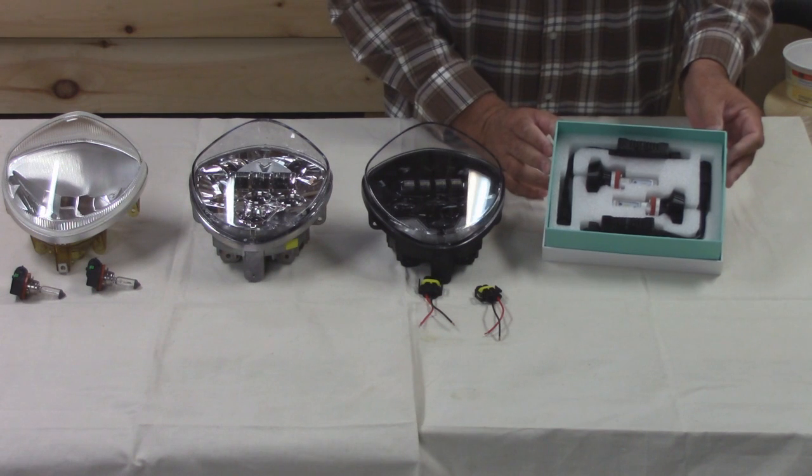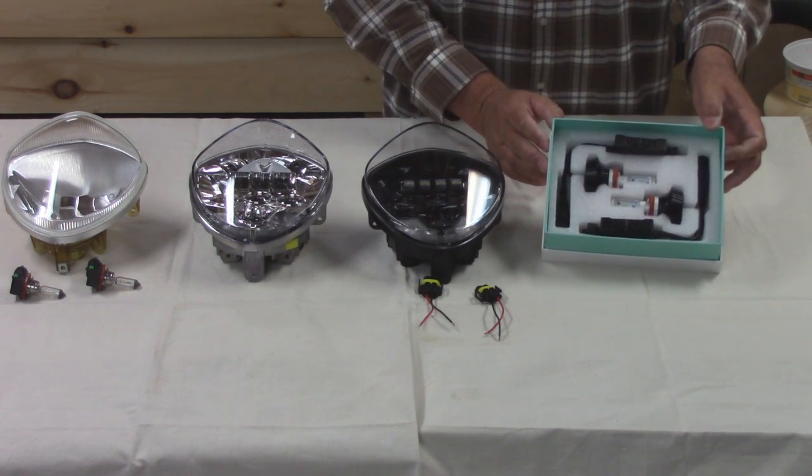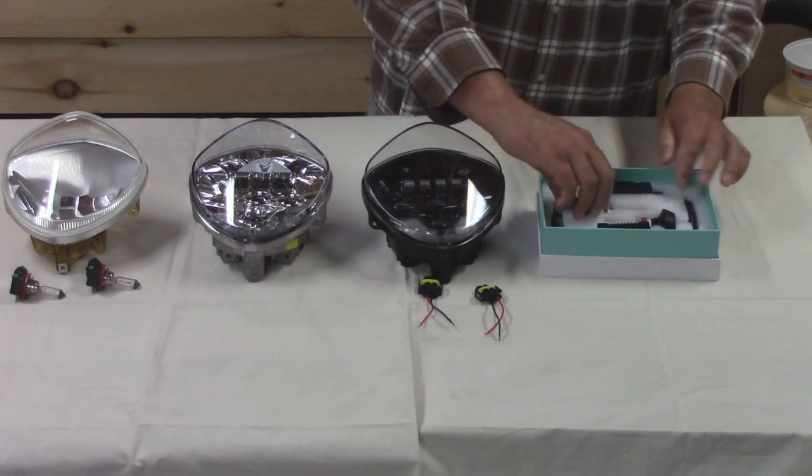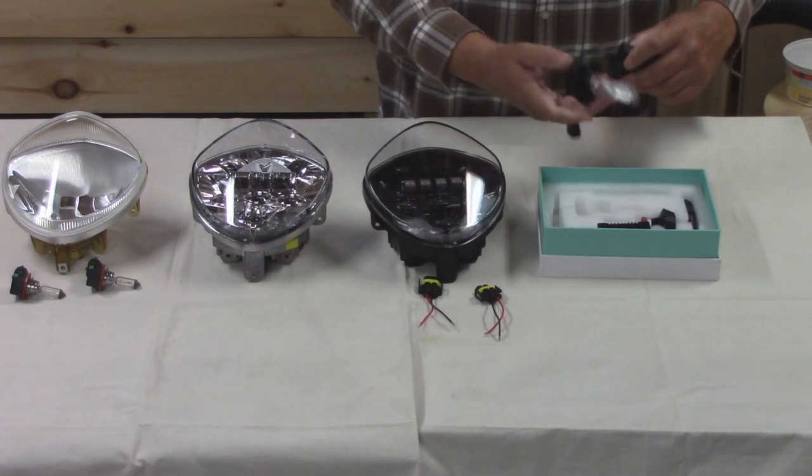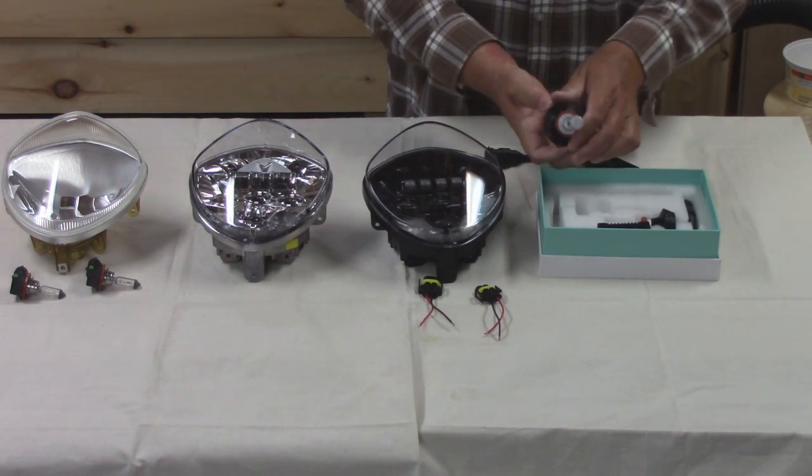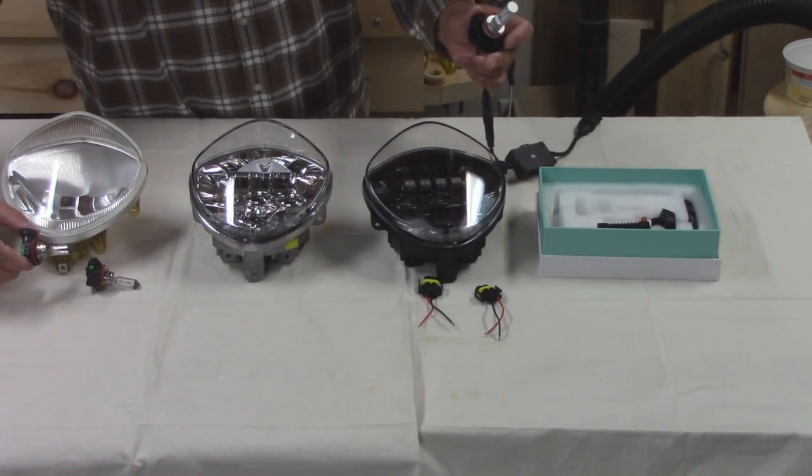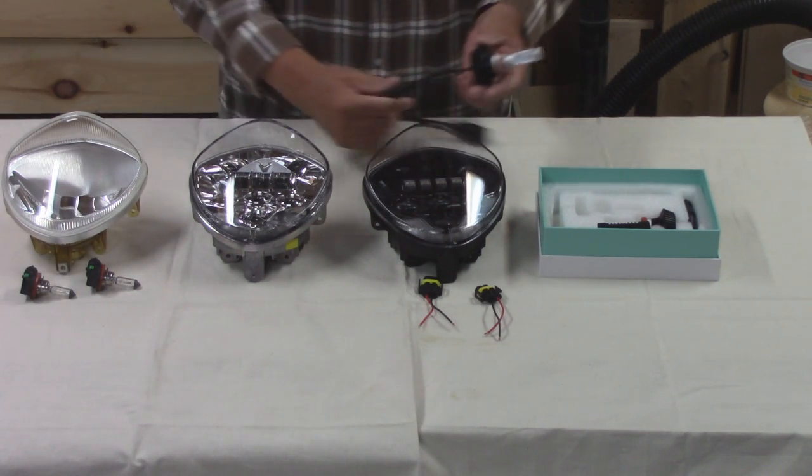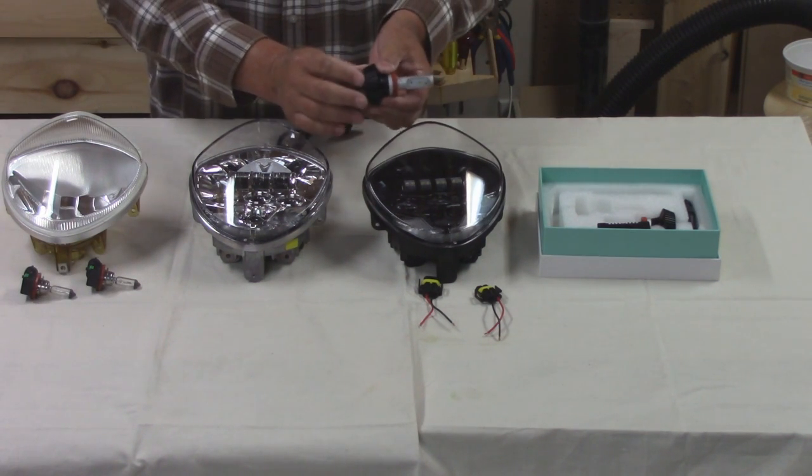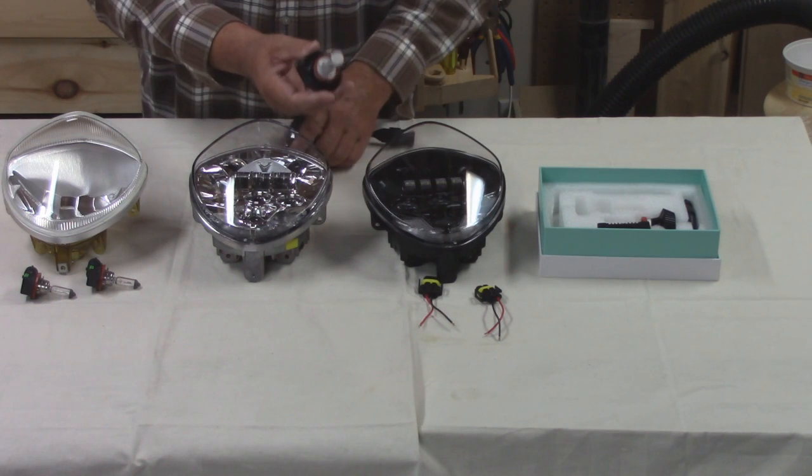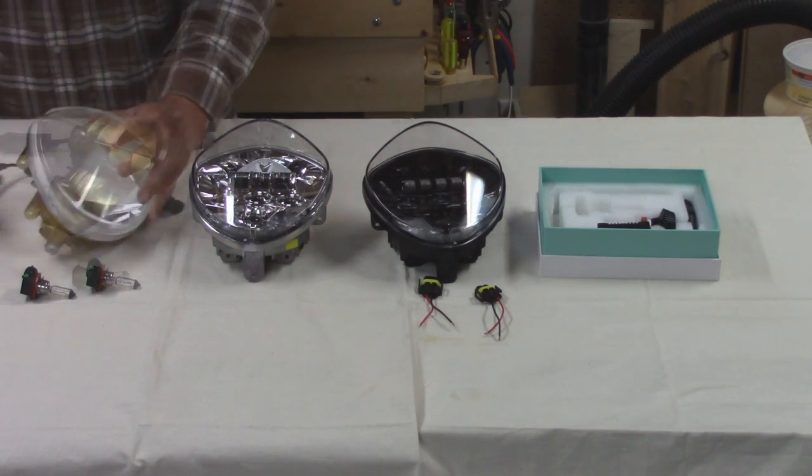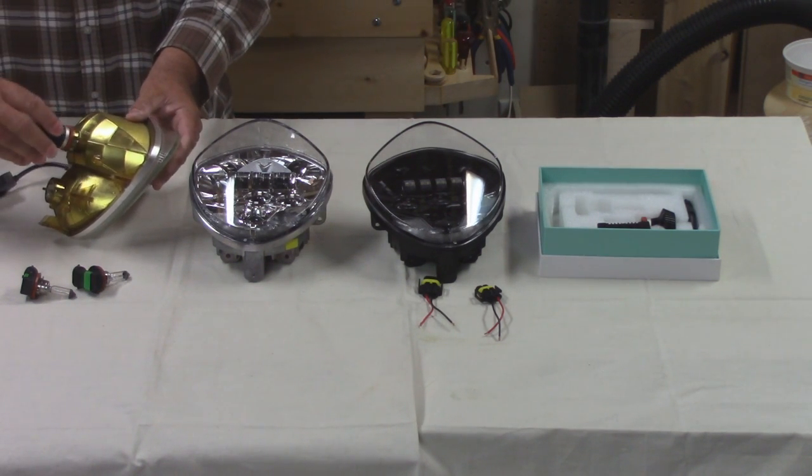Another type of light I got from the same company overseas is the H11 LED model. These are a direct plug and play for the halogen bulbs. There is no fan on them. It is an aluminum heat sink and they're very nice. I like them. They just simply plug in the same way.